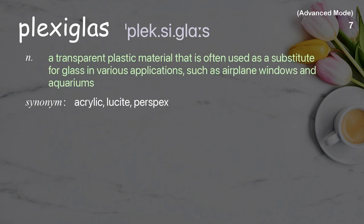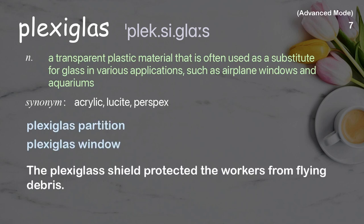Plexiglass. A transparent plastic material that is often used as a substitute for glass in various applications, such as airplane windows and aquariums. Examples: Plexiglass partition, Plexiglass window. The Plexiglass shield protected the workers from flying debris.